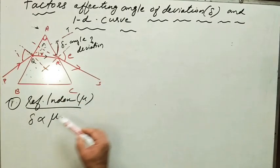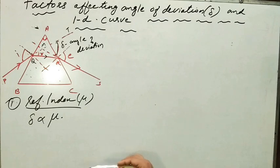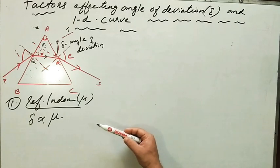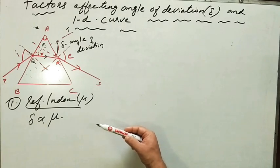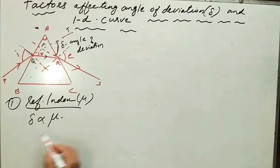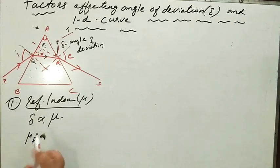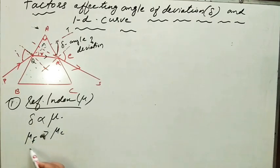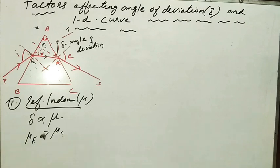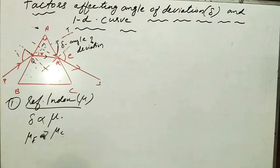For example, a flint glass prism produces more deviation than a crown glass prism for the same refracting angle, because the refractive index of flint glass is more than that of crown glass. So though both are glass, the higher refractive index of flint glass means it produces a greater angle of deviation.